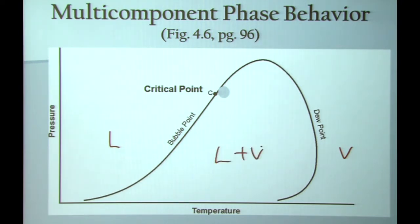We call this the bubble point curve because when you take a liquid and you heat it up at constant pressure, when you hit that curve, you form your first bubble of vapor. This temperature is the bubble point temperature at that pressure for this mixture. We call this the dew point curve. If you take a vapor and cool it down at constant pressure, when you hit that curve, you'll form your first drop of liquid.